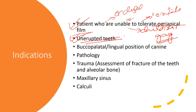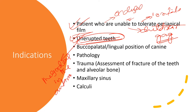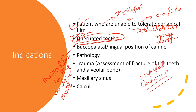Other indications include: unerupted teeth such as a mesiodens in the anterior maxilla; impacted canine — to know the direction of an impacted canine; buccopalatal or lingual position of the canine — to determine which position the canine is in; and pathology in the anterior or posterior part of the maxilla.